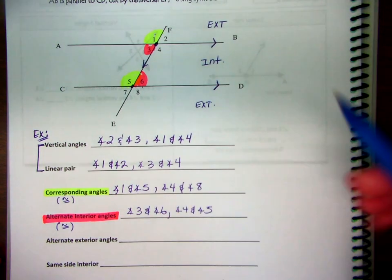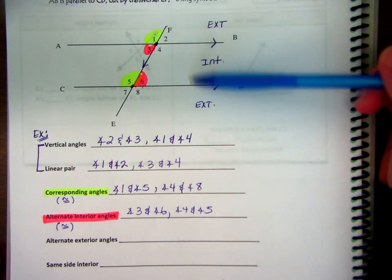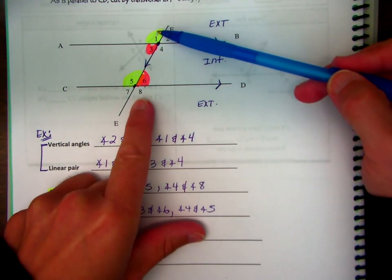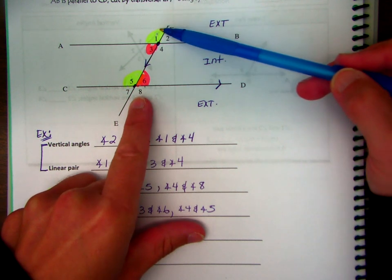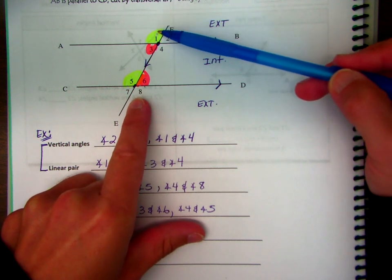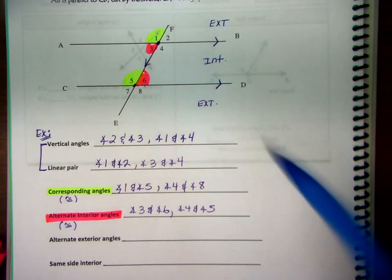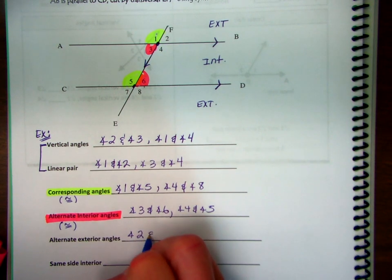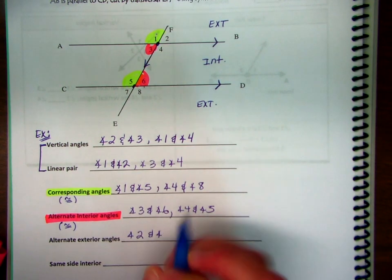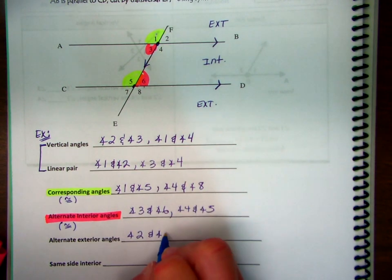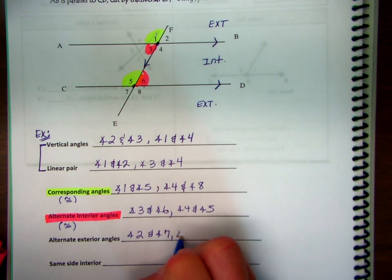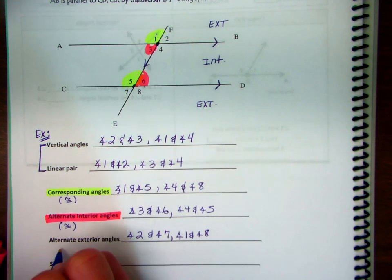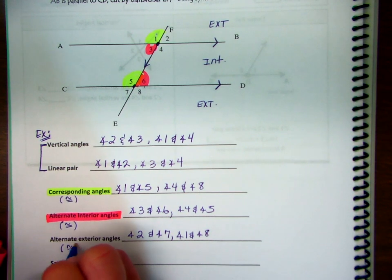Alternate exterior angles: we disregard the interior space. That would be like one and eight. On the exterior on the other side of the transversal, that's two and seven. Those are the only two alternate exterior pairs, and their measures are congruent.